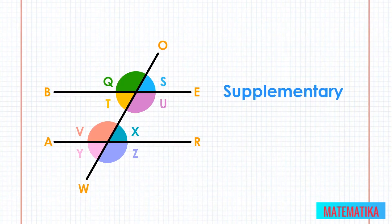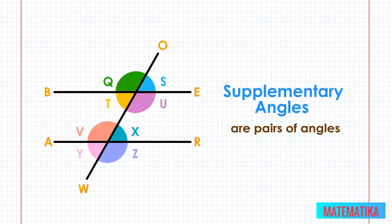These are called supplementary angles. What are supplementary angles? Supplementary angles are pairs of angles that add up to 180 degrees. Because all straight lines are 180 degrees,